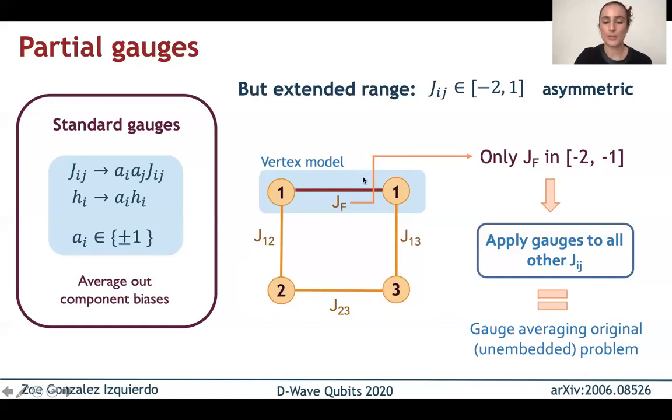We have to choose a coupling within the vertex model. And because we want all the qubits to act as one and to be aligned, we choose a ferromagnetic coupling, which we call jf or jferro, and then we also need to set its magnitude. It should be strong enough that the vertex model is unlikely to break, that is that the different qubits are unlikely to point in different directions. And for this, the extended range in D-Wave is very useful, which allows us to pick value between minus two and one. So our jferro will be between minus two and minus one.